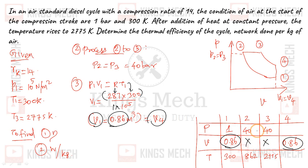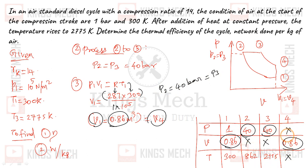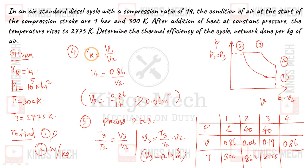After that, finding P2 and P3. From the last step, P2 equals 40 bar, and since the process 2 to 3 is at constant pressure, P3 is also 40 bar. Then V1 divided by V2 equals compression ratio 14, so V2 equals 0.86 divided by 14, giving V2 approximately 0.06 m³/kg.